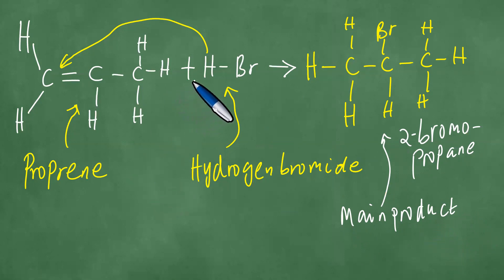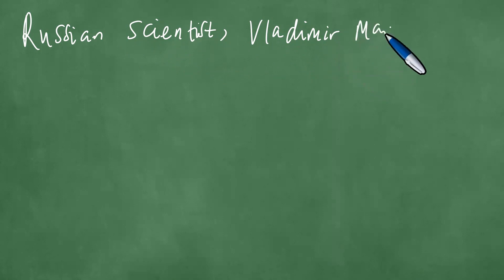Now, this, the fact that this hydrogen is bonded to the carbon on one side of the double bond with the most hydrogen atoms, so that's where this hydrogen is going to be bonded, is due to a result by the Russian scientist. This Russian scientist is called Vladimir Markovnikov.